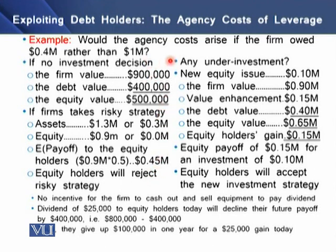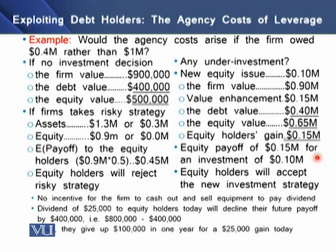Regarding the underinvestment issue, in that particular case the new equity issue will be $0.1 million. The firm's assets value is $0.9 million and the value enhancement is $0.15 million. After deducting the debt value of $0.4 million, there is a net gain of $0.15 million for equity holders. So equity holders are paying $0.15 million for an investment of $1.1 million, meaning equity holders will accept this new investment strategy as they are better off in this case.